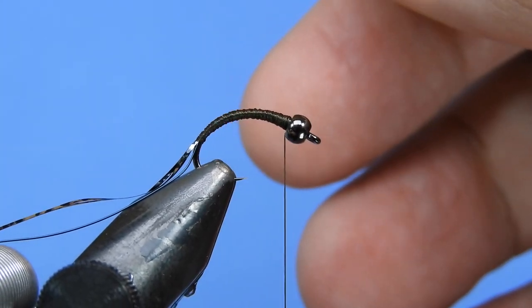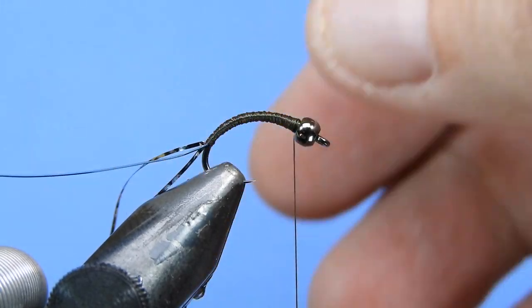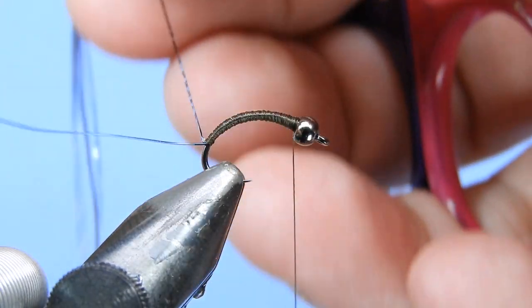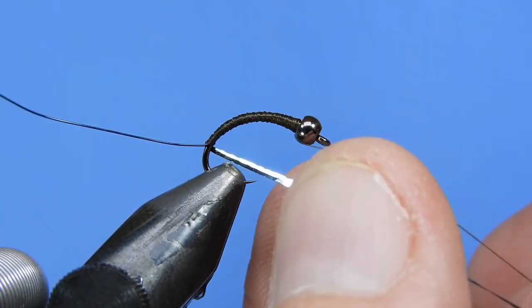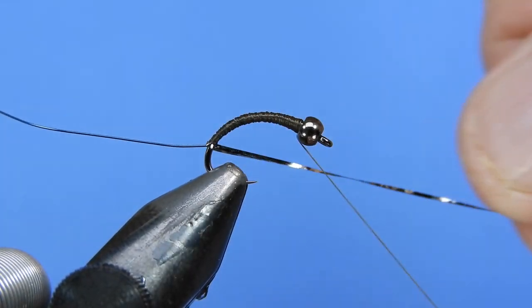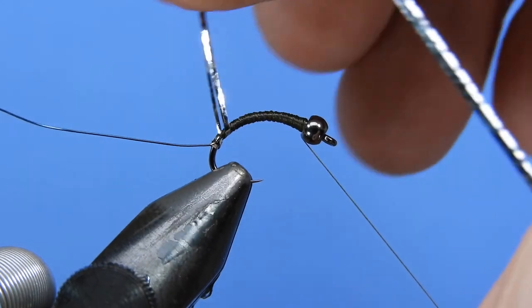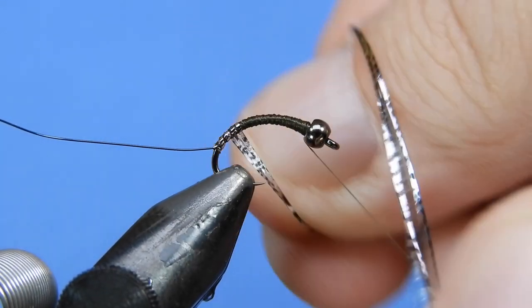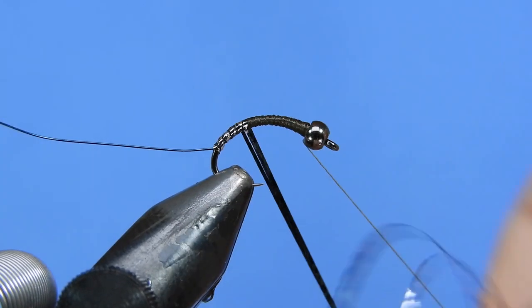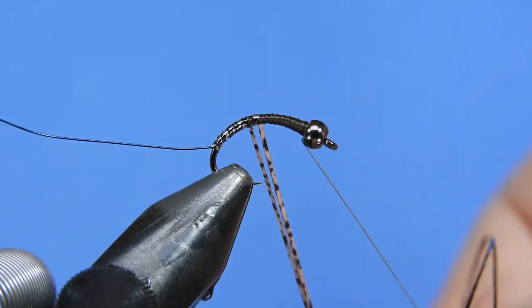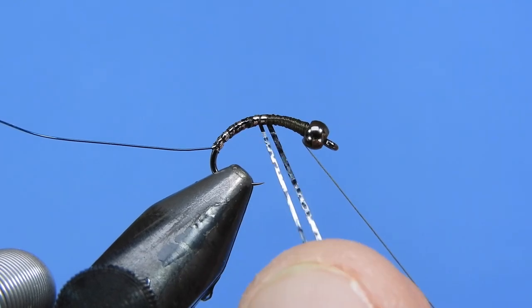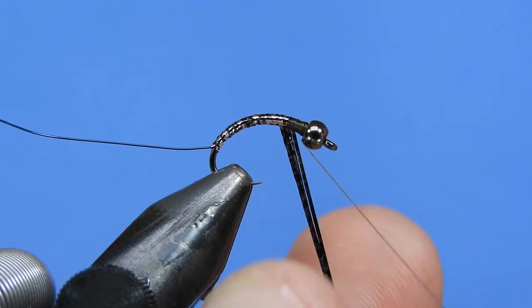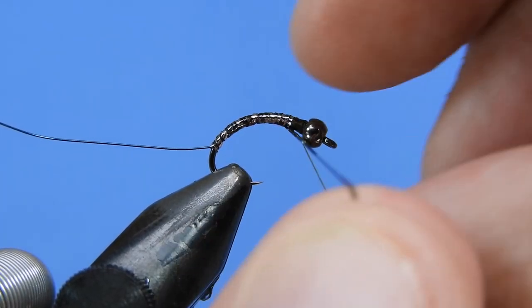So we're going to take all four of those flashabou strands. We want to just kind of make sure that they're more or less together and we'll start wrapping those around the hook shank. If they do split like that, that's not too big of a deal. You just want to try and flatten it out and try and get them to roll together as much as possible. And because this is a little bit of a speckled fly, it's not going to be as noticeable if you do happen to miss a spot.